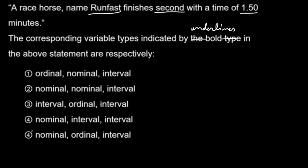Here you have to change to 5. So the first variable is x1, Runfast name, nominal level. Therefore, maybe 2, maybe 4, maybe 5.